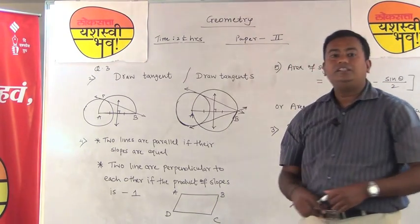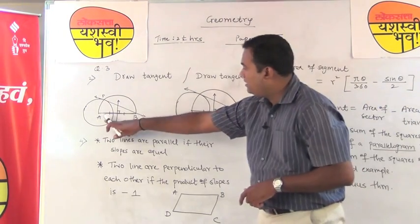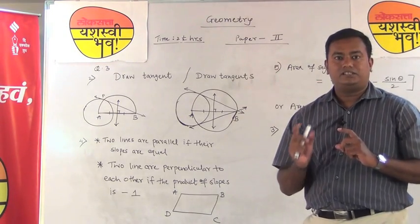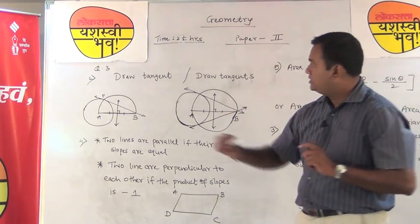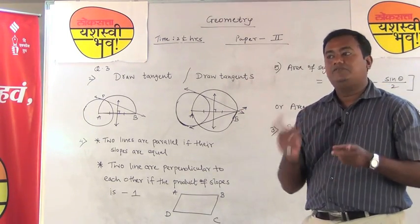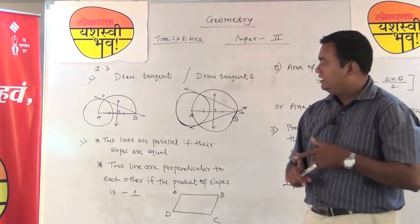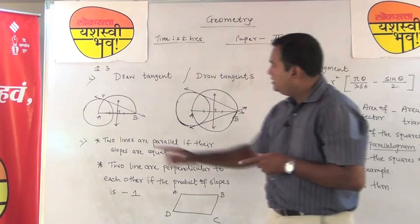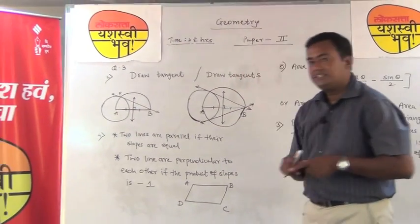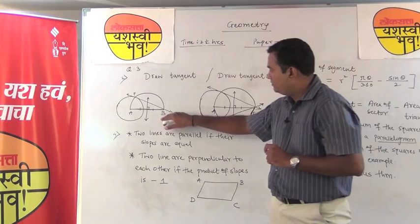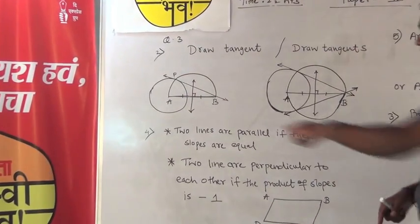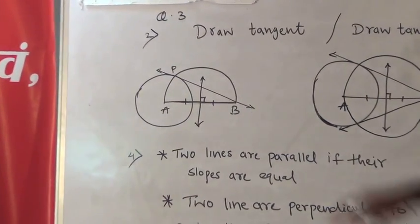Question number 3 is: draw the tangent to the circle with center A when point B is outside the circle. Read the question very carefully. If the question says 'draw a tangent,' you draw only one tangent. First draw the circle with the given radius, locate point B, bisect segment AB, draw a semicircle with AB as diameter, and the intersection gives point P — then draw the tangent.